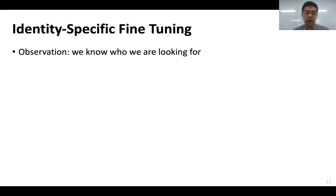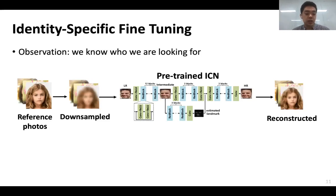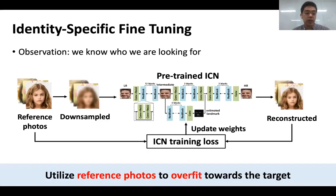For example, in a parent-finding-missing-child scenario, the parent will have ample pictures of their child. Our idea is to utilize such reference photos to fine-tune the ICN to enhance accuracy. Specifically, we take the reference photos, downsample them, feed them to the pre-trained ICN to get reconstructed outputs, and use the ICN training loss to fine-tune the pre-trained ICN weights to overfit towards the target. This process greatly helps enhance true positives with only a relatively small increase in false positives.